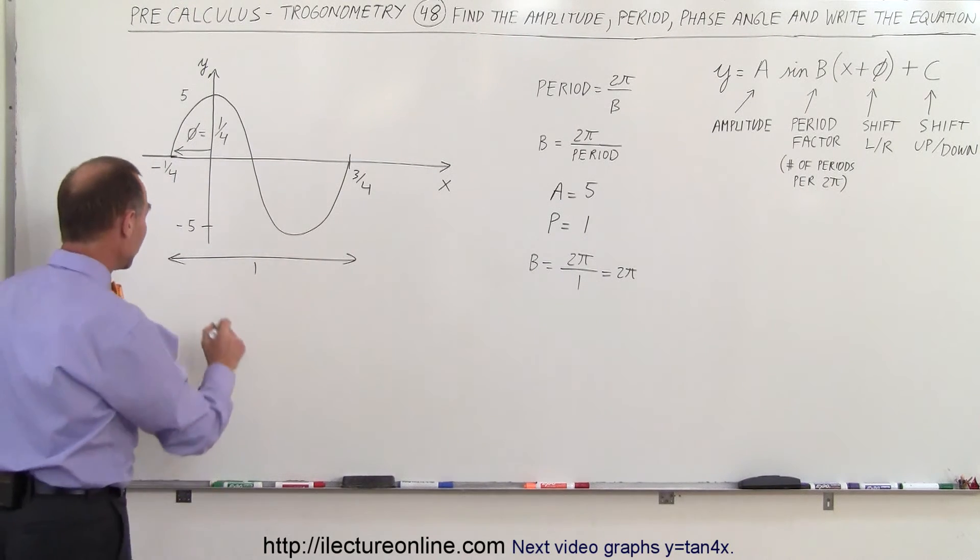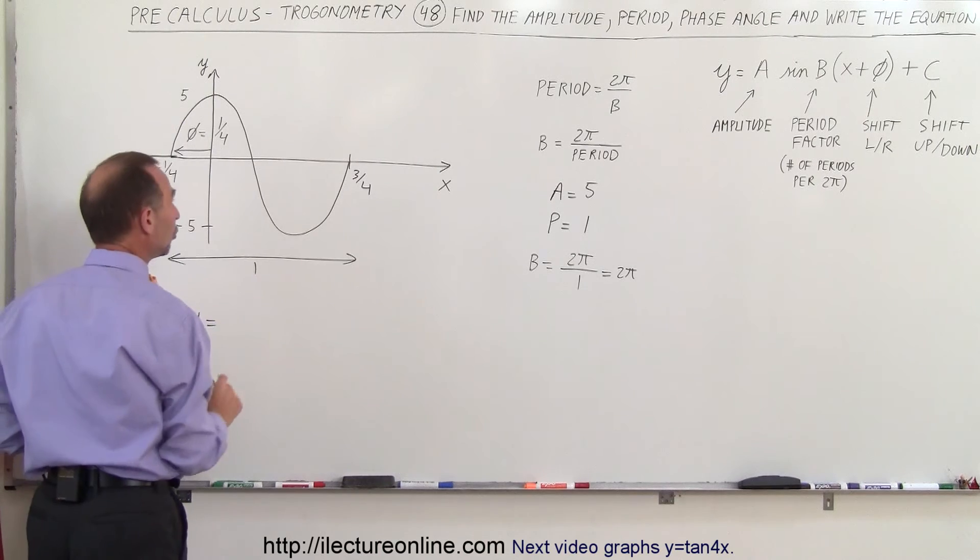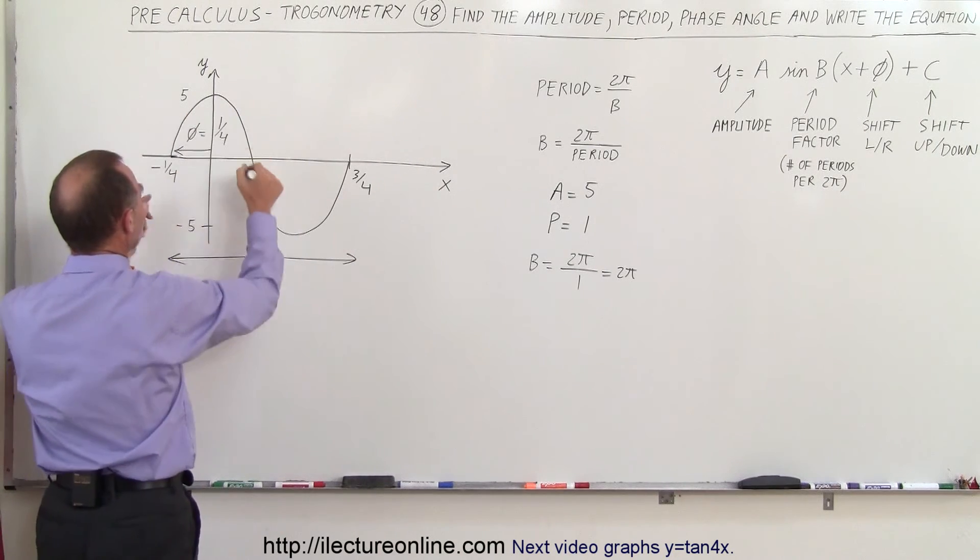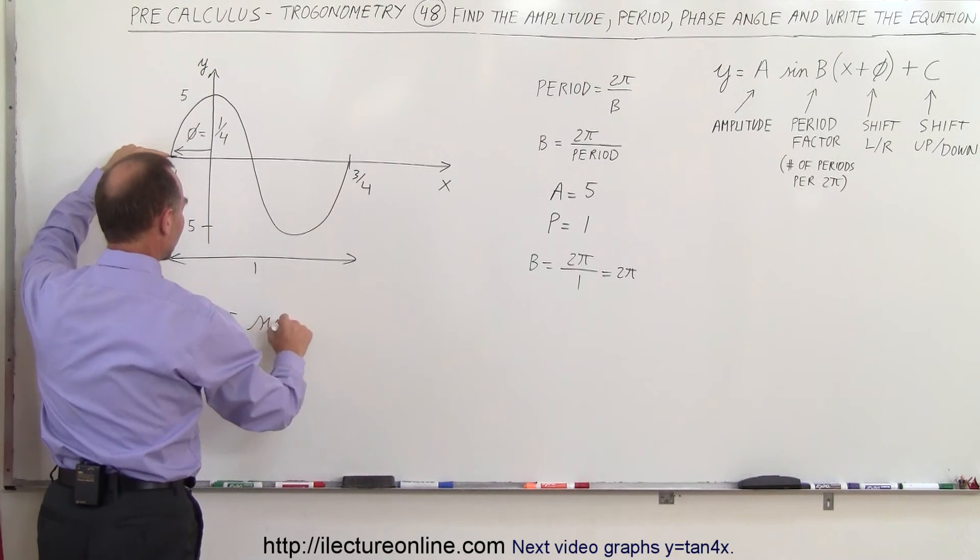Now we're ready to write the equation. Y is equal to the amplitude, which is 5. We're going to make that a sine function because it starts at y equals zero.